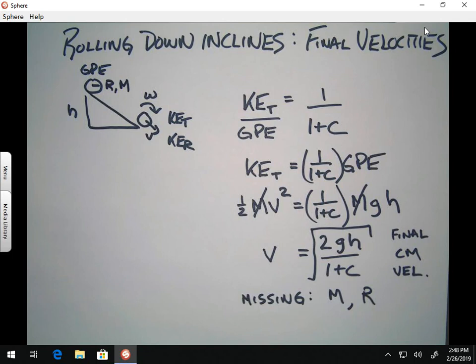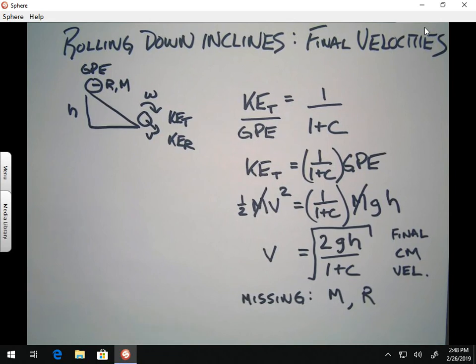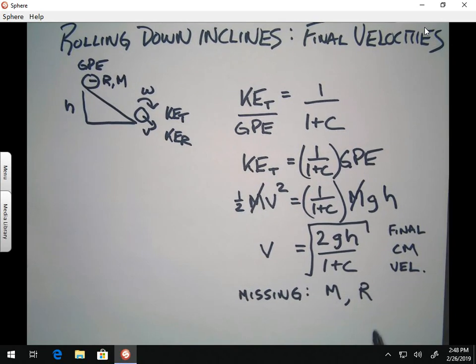So, this means that shapes can have very different radiuses, but they can still basically come down to the bottom of a ramp with the same speed. So, these two things are not part of this equation. We'll do a demonstration of this in class for sure.